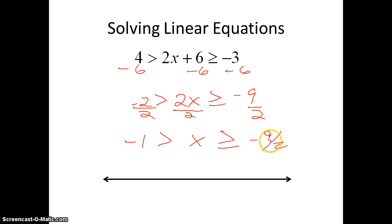So I get negative 1 is greater than x is greater than or equal to negative 9 over 2. Now, if we look at the way that this is, it makes sense. It's true. But our lesser number, our lowest number is all the way over here to the right, which usually our greater number is that, right? So let's rewrite this as negative 9 over 2 is less than or equal to x is less than negative 1.